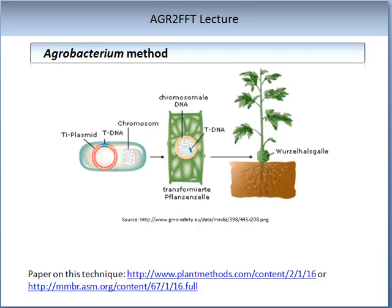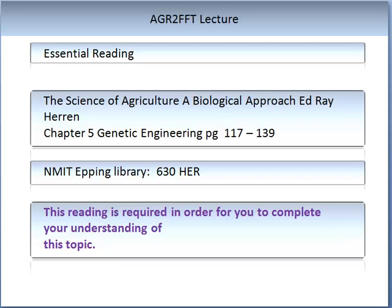Transformation with agrobacterium can be achieved in a number of ways. Protoplasts or leaf discs can be introduced into the agrobacterium and whole plants regenerated using the technique of plant tissue culture. A common transformation protocol for Arabidopsis is called the floral dip method — the flowers are dipped into the agrobacterium culture and the bacteria transforms the germ lines that make up the female gametes. The seeds can be screened for antibiotic resistance, and thus you now have the marker of interest — plants that have not integrated the plasmid DNA will die. Please read chapter 5 on the topic of genetic engineering, which can be found in 'The Science of Agriculture: A Biological Approach' edited by Ray Heron, available at the NMIT Epping Library.